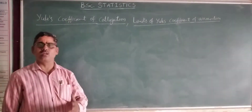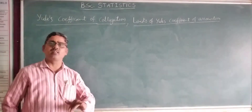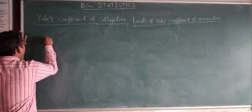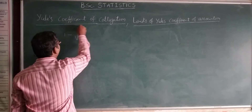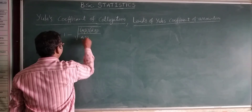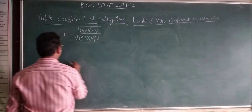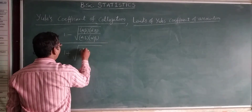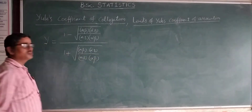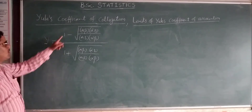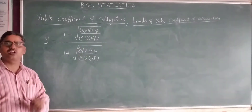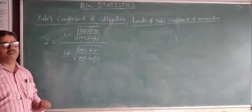Yule's coefficient of colligation is one more measure to know the association between attributes. The formula is: Y equals 1 minus the square root of (A·beta·alpha·B divided by A·B·alpha·beta), whole divided by 1 plus the square root of that same quantity. This is the formula of Yule's coefficient of colligation.